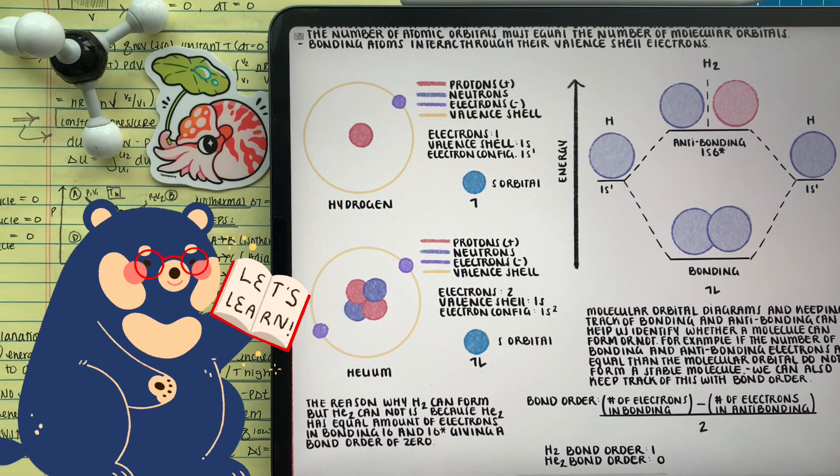But even though it's not depicted here in this example, we can expect with helium, if two helium atoms were interacting with one another, we will have two electrons paired in the bonding and two electrons paired in the anti-bonding.